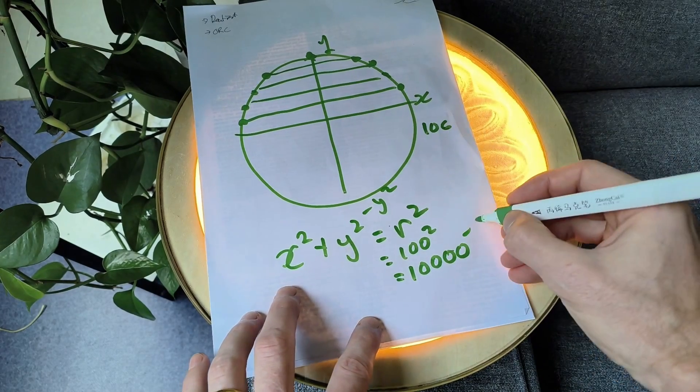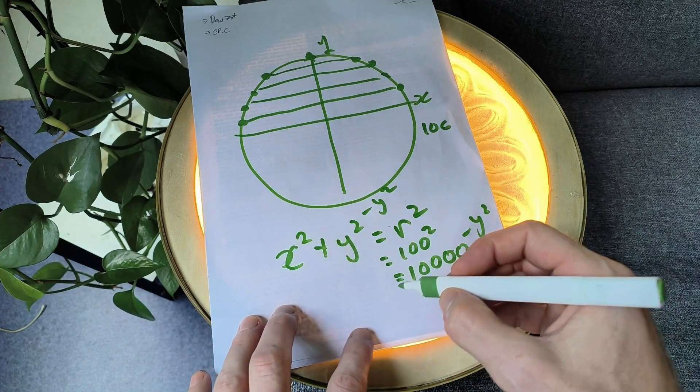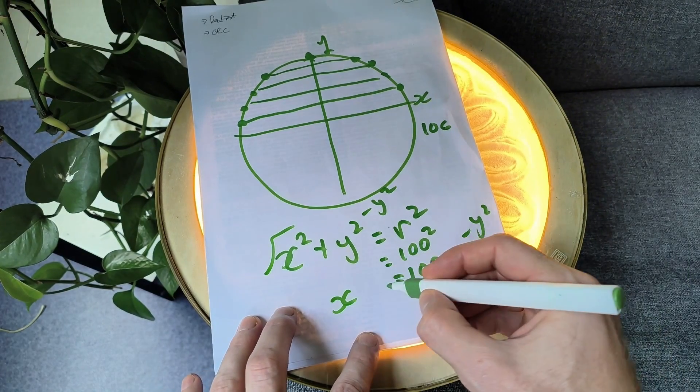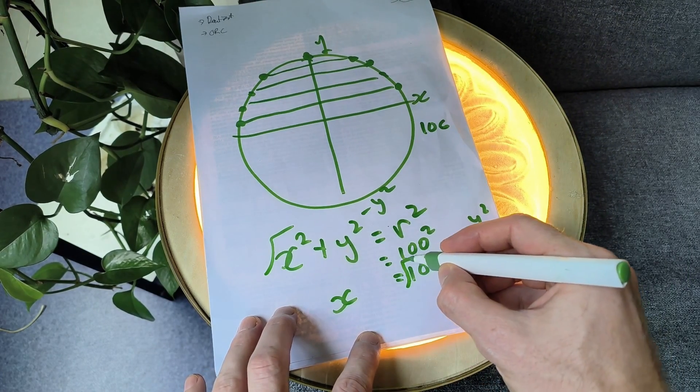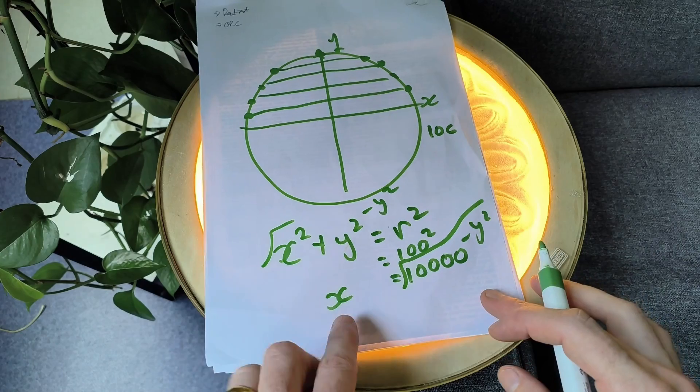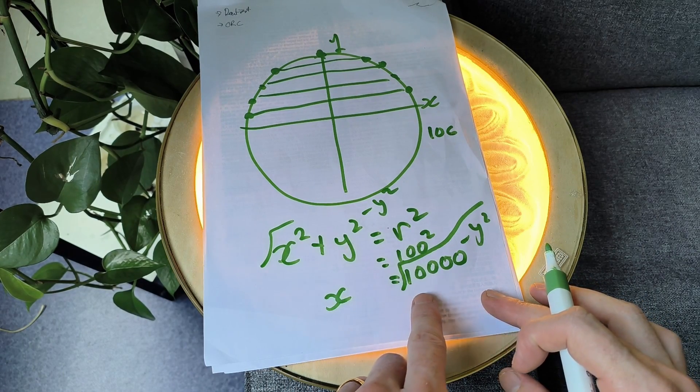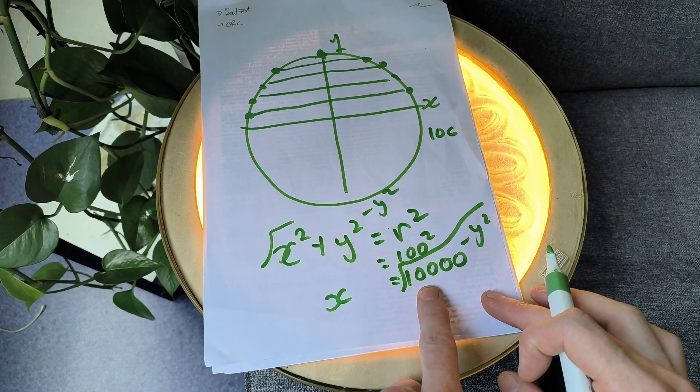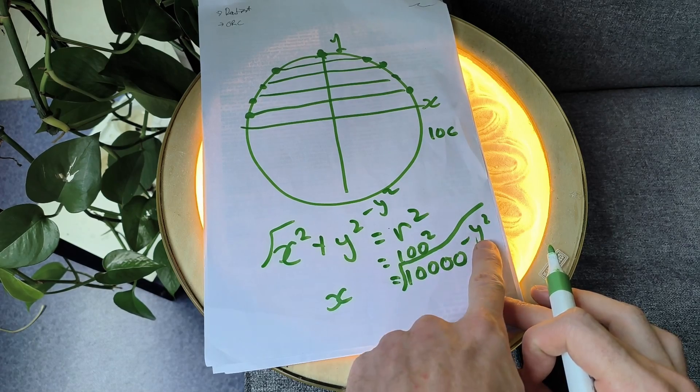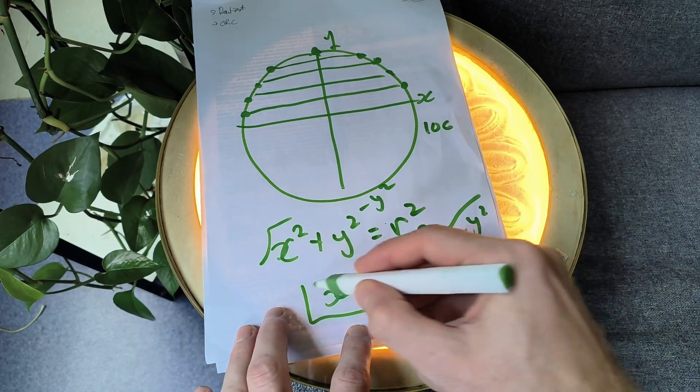To solve for x, we can subtract y squared, so we have x squared. Then we take the square root. The function is very easy to put into Arduino: x equals the square root of 10,000 minus y squared.